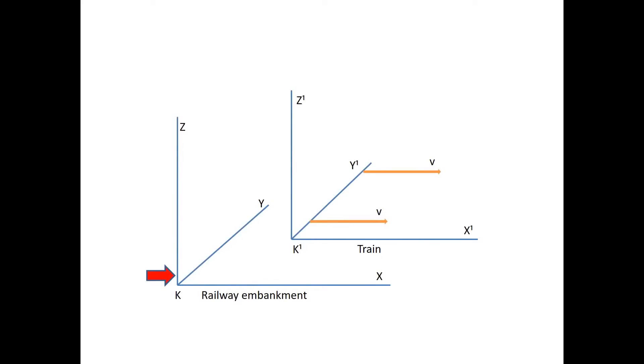The coordinate system designated K represents a railway embankment — this is the system standing still in Feynman's words. The other coordinate system is designated K1, Feynman's moving system, which refers to a train moving along the embankment with a constant velocity V. Using these coordinate systems, Einstein mounts the challenge to the principle of relativity by bringing out an inconsistency that comes to light when we look at two items from our list of classical theories and hypotheses, first presented in video one.